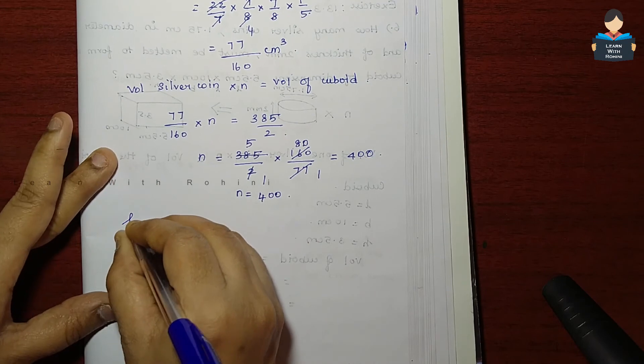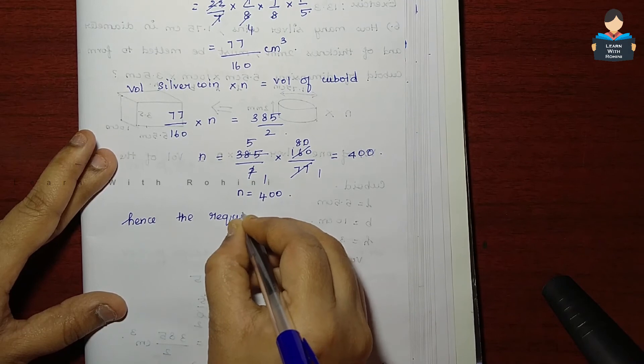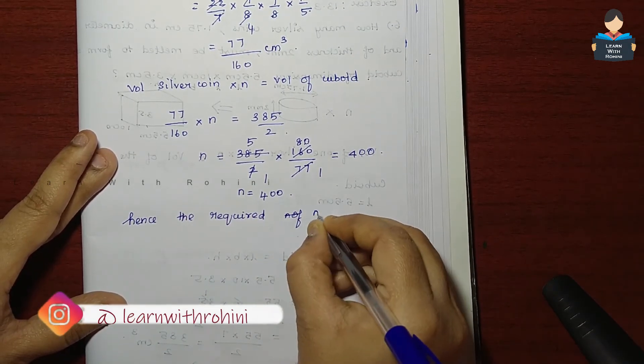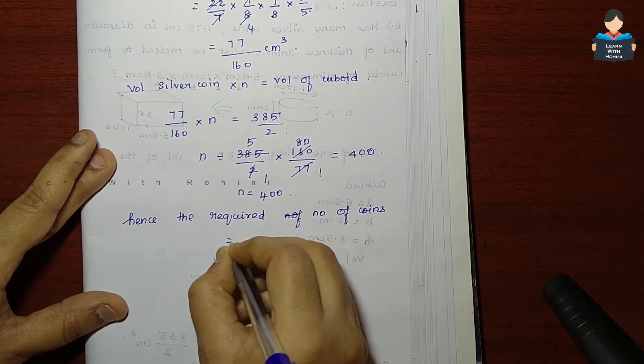Hence, the required number of coins equal to 400.